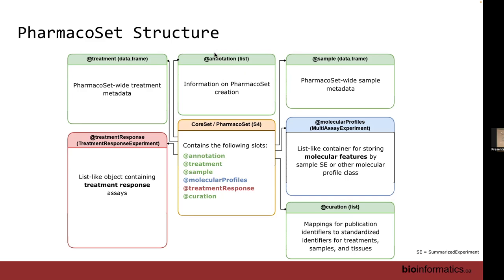I've also annotated what data types each slot contains. Treatment is a data frame; annotation is a list so you can have anything in it; sample is a data frame; molecular profiles is a MultiAssayExperiment. Treatment response experiment is another class we've built. So a pharmacoset is a class of classes — a big container holding other containers. Historically this was just a list, but we built this to handle large data.